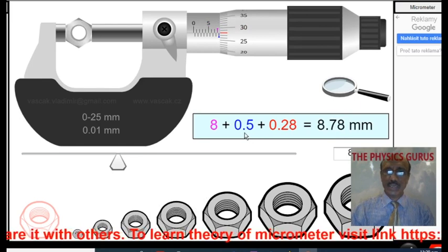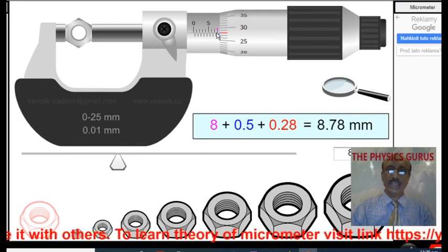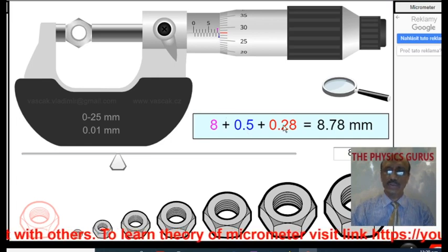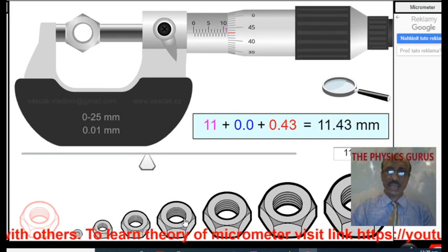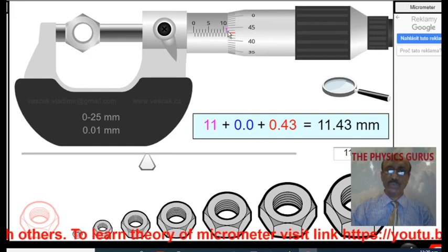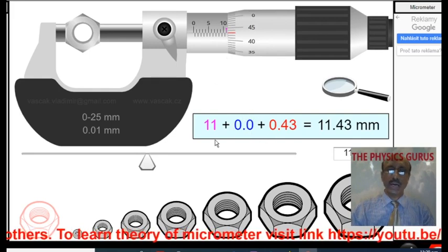Now again you can see that blue line, it means half mark is visible and the purple line is at 8. So 8.5 and 0.28. Place another object. Again in this case, the purple line is visible but the blue line is not visible. So half mark is not visible.